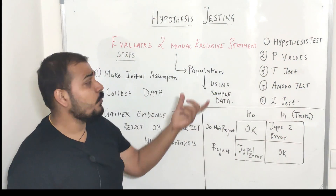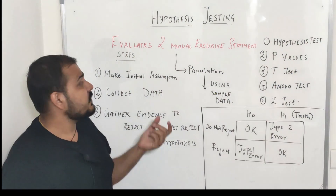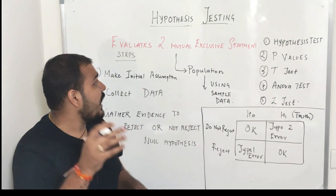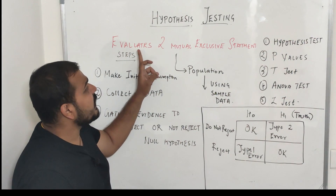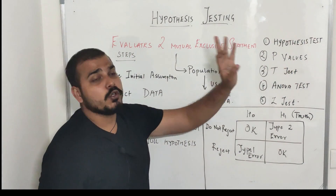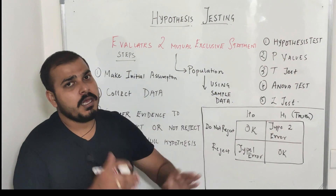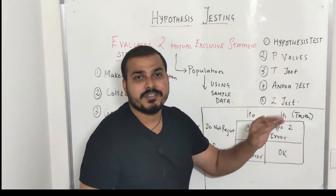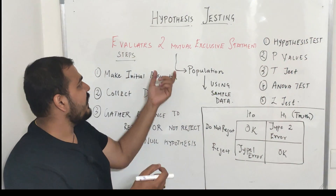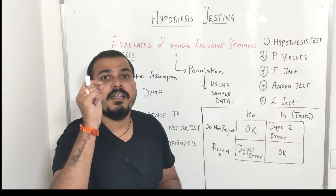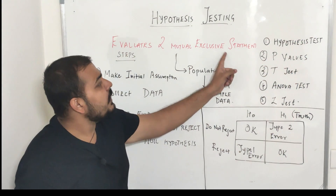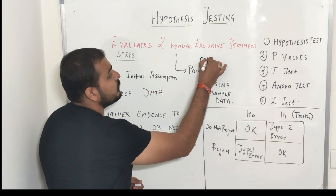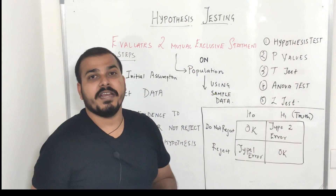What is hypothesis testing? What are the different types of hypothesis testing? What are the steps in hypothesis testing? Everything we'll try to discuss. In hypothesis testing, we actually evaluate 2 mutually exclusive statements. We can evaluate 3 to 4 mutual statements also — for that, we usually use ANOVA test. But in basic terminology, we try to evaluate 2 mutually exclusive statements on a population using a sample of data.